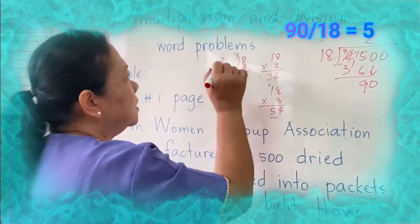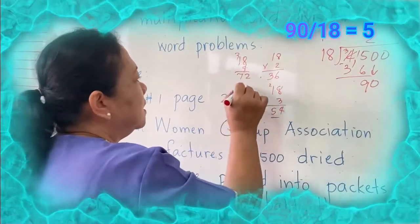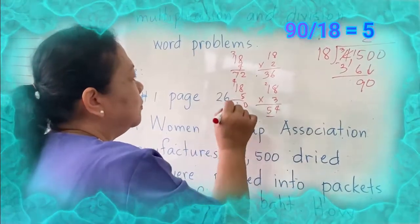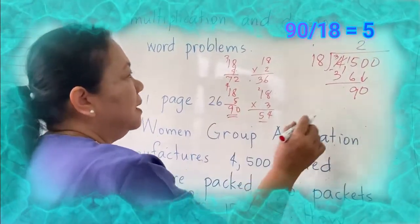4 times 1, 4 plus 3, 7. 18 times 5, 5 times 8, 40, carry 4. 5 times 1, 5 plus 4, 9. Exact. 90.